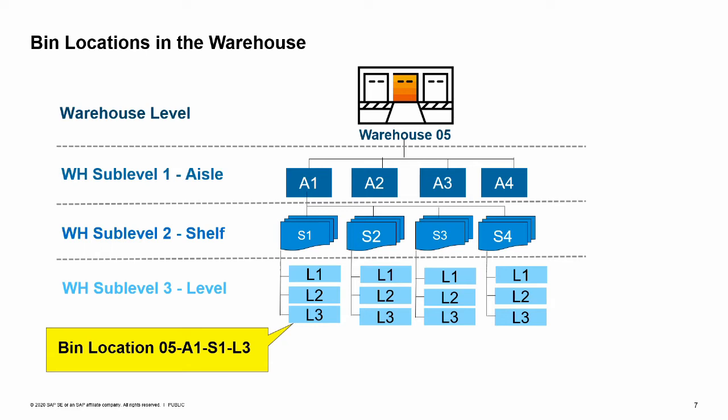In our business example, Warehouse 5 is managed with bin locations. The warehouse is broken out into four levels. The top level is the warehouse. Below the warehouse, the first sublevel is made of four aisles, A1 through A4.